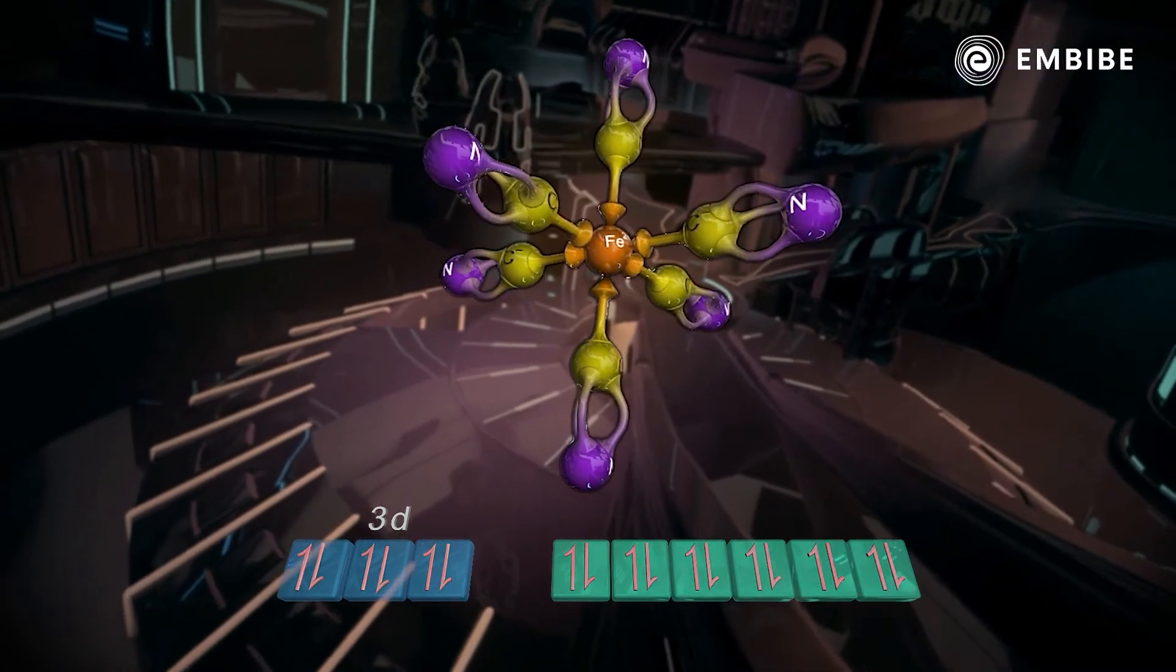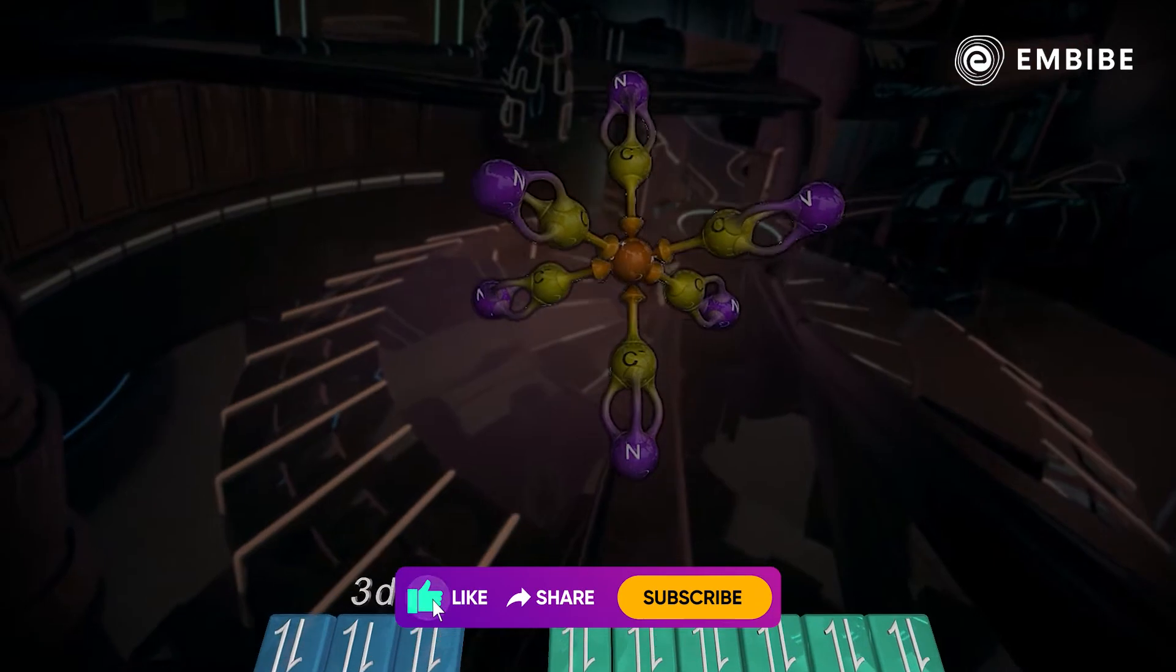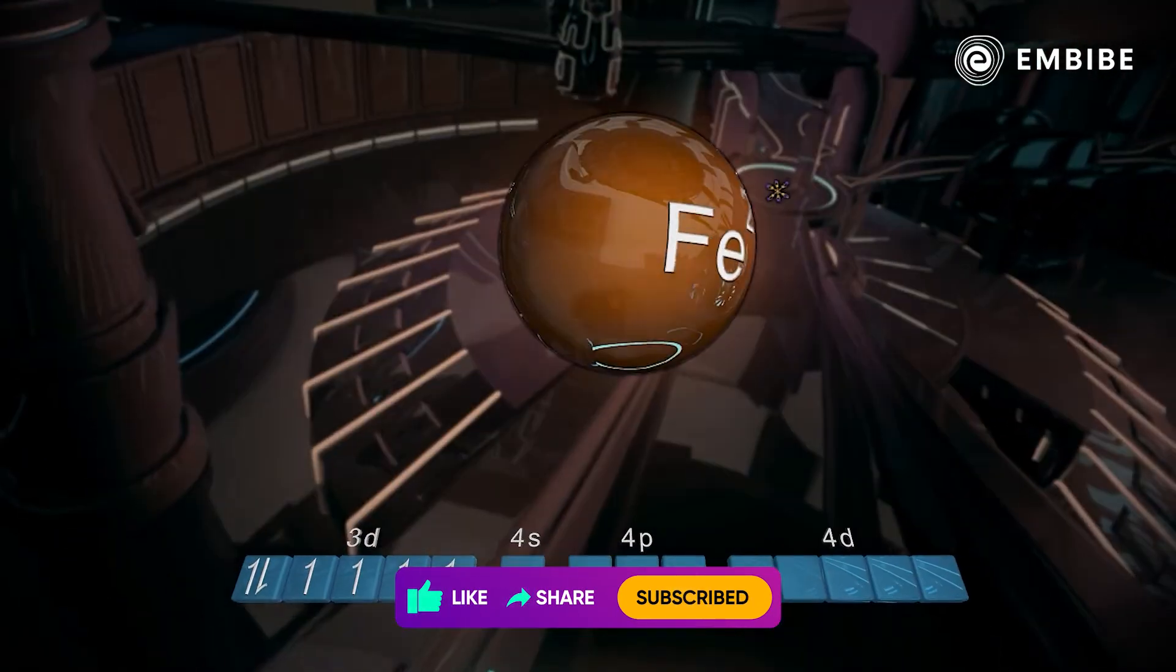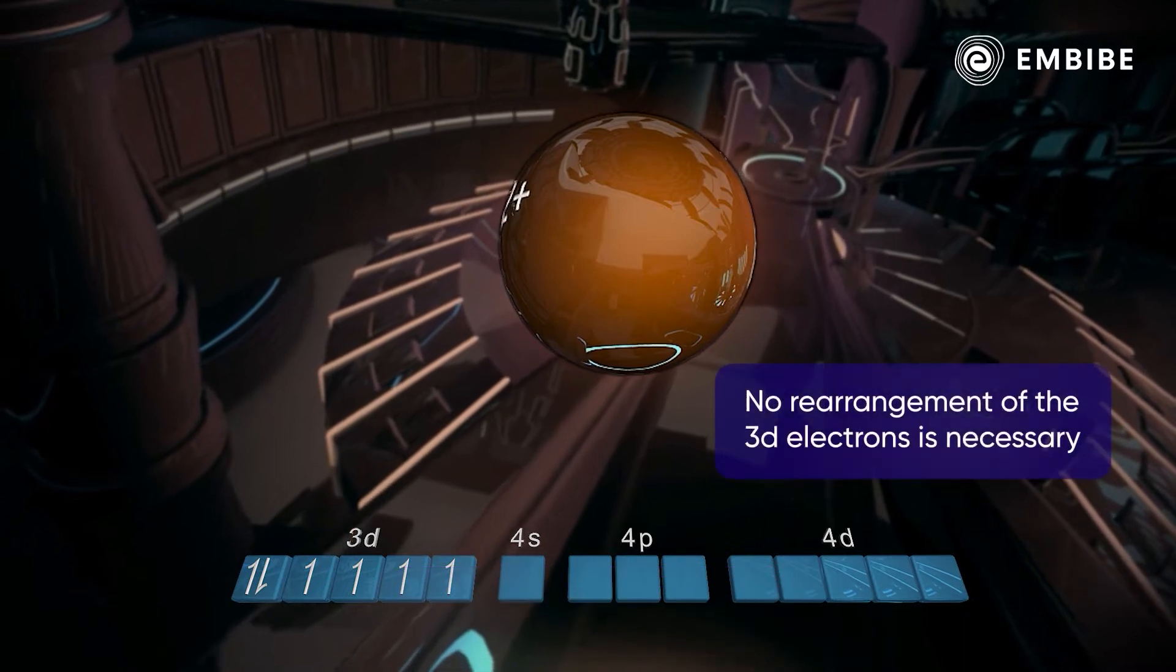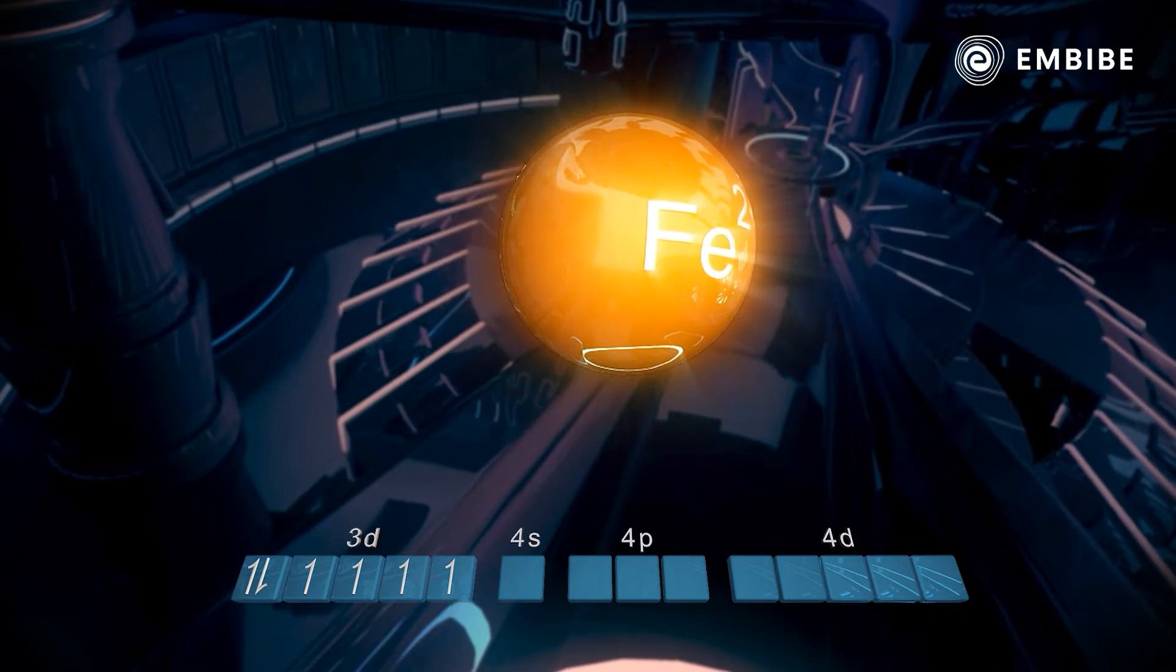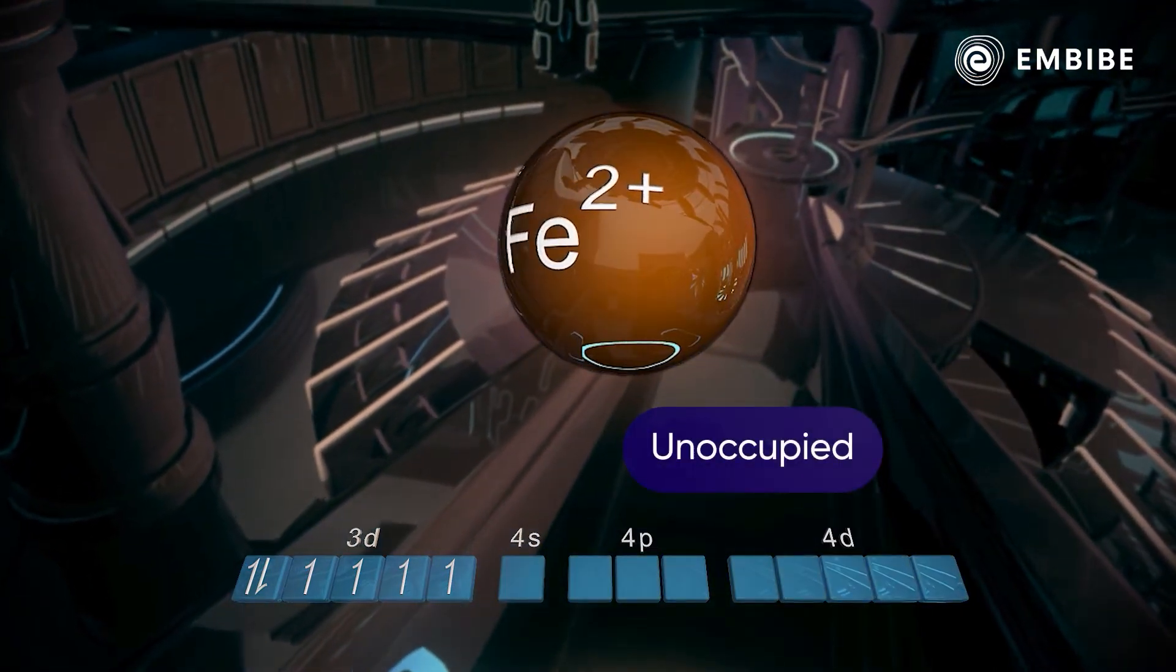Now let us explore the second possibility of sp3d2 state of hybridization. For this, no rearrangement of the 3d electrons is necessary since the orbitals of the Fe2+ required for this hybridization are already unoccupied.